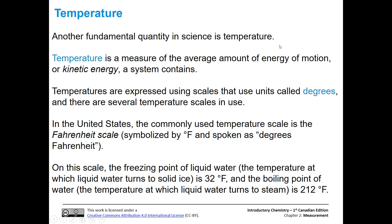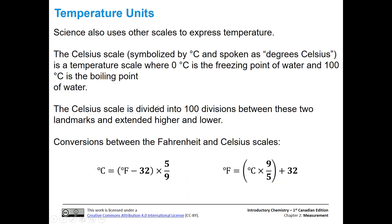Other temperature scales exist that science uses, as does much of the rest of the world. The first is the Celsius scale, symbolized by °C. On this scale, zero degrees is the freezing point of water and 100 degrees is the boiling point of water. The Celsius scale is divided into 100 divisions between these two landmarks, and then extended higher and lower.